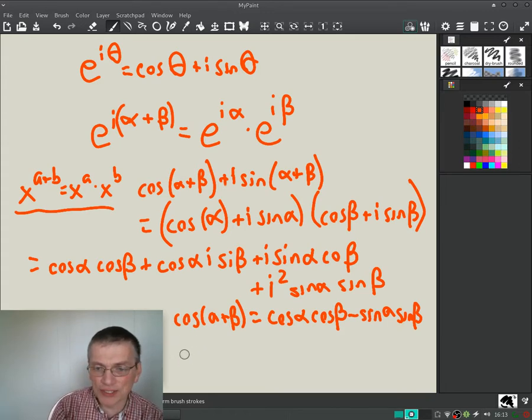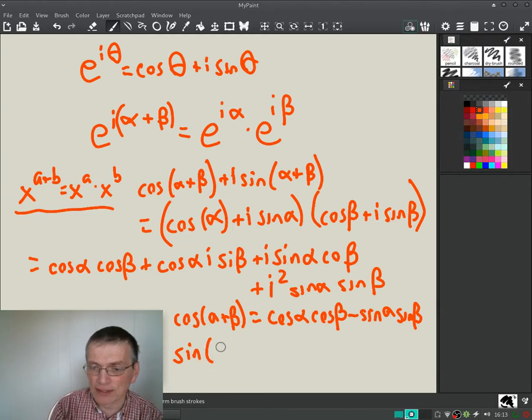How about the imaginary part? The imaginary part is, I'm going to leave the i's off the imaginary part because we can factor them out at the end. Sine of alpha plus beta equals...